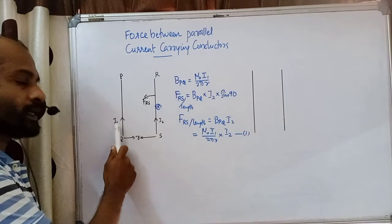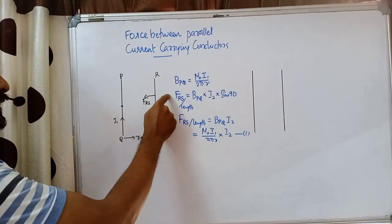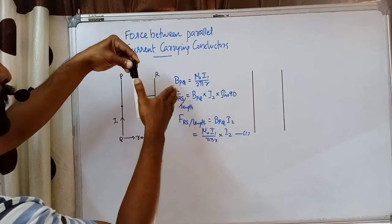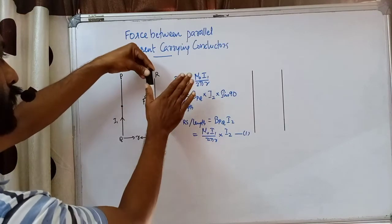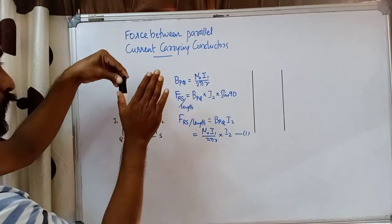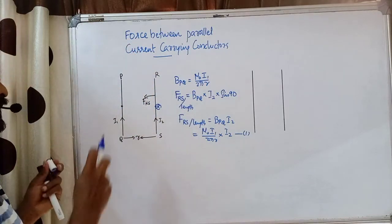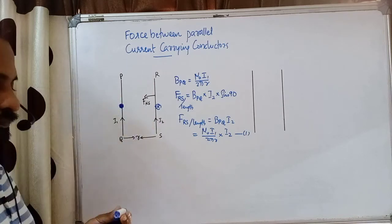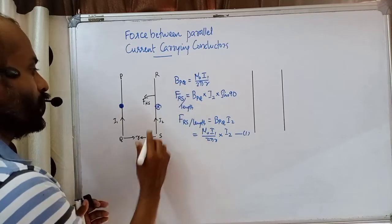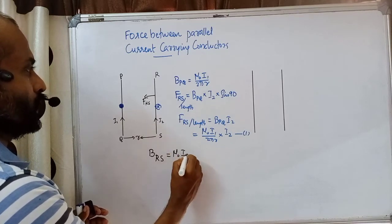Now we find the force on conductor PQ. We choose a point on PQ. Conductor RS produces a magnetic field at this point. Using the right-hand thumb rule with current in RS flowing upward, grasping towards this point on PQ, the magnetic field here is outward — shown by a dot symbol. The strength of this magnetic field is B_RS, equal to μ₀i₂ divided by 2πr, at the same distance r.